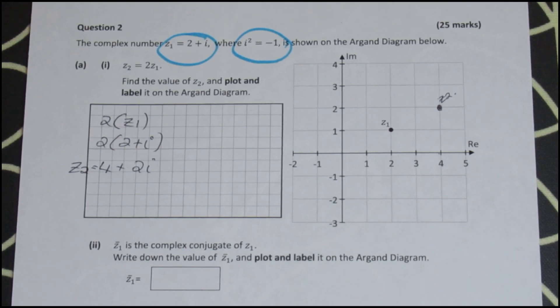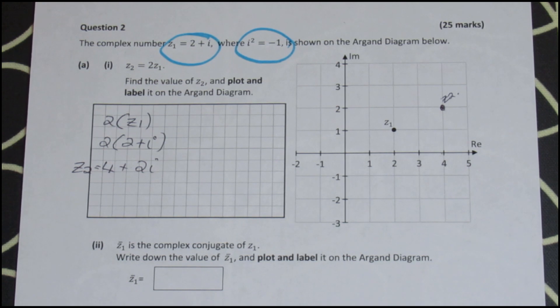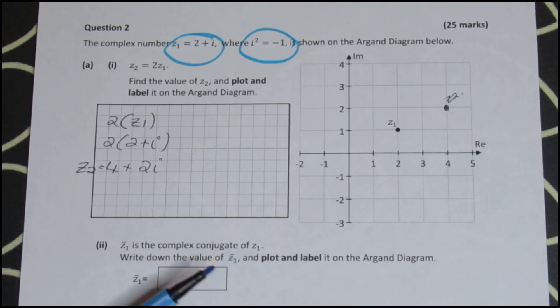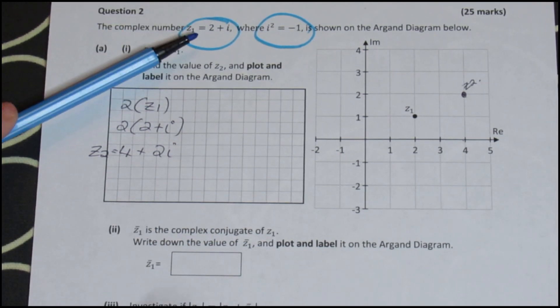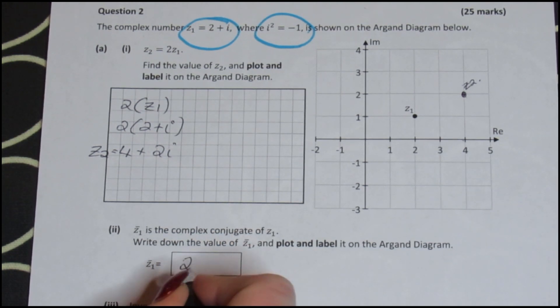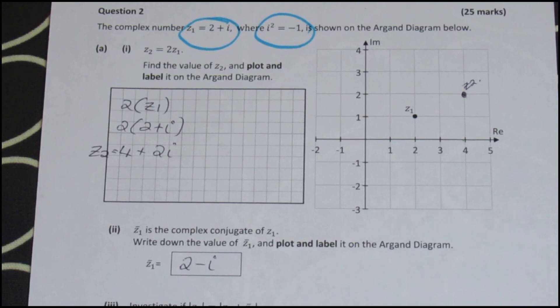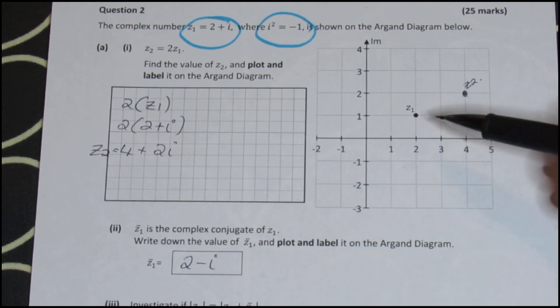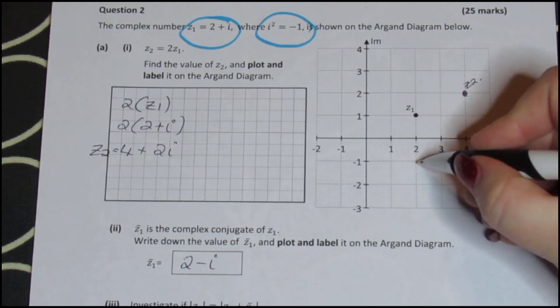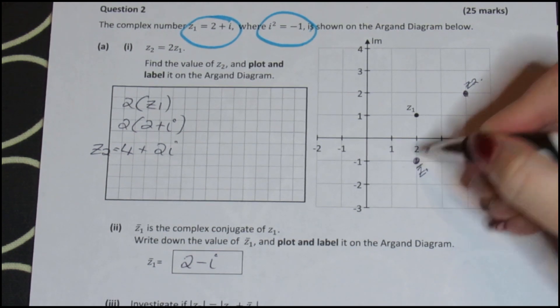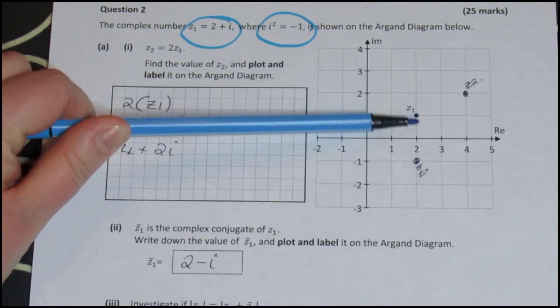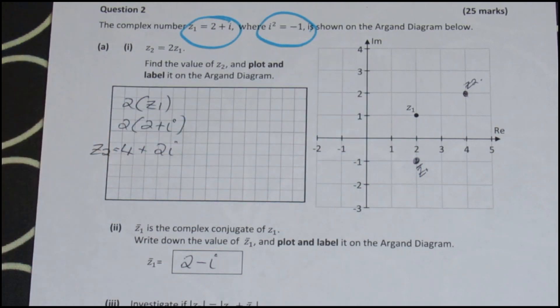Part II of part A is asking me for Z1 with a little bar over it. That stands for the complex conjugate of Z1. If Z1 is 2 plus i, Z1 bar is 2 minus i. So I simply change the sign of the imaginary part. They also say plot and label it on your Argand diagram. We're going to go to 2 and down to minus 1. So Z1 bar is just there on my diagram. Notice that they are pretty much reflections of each other in the real axis there. Okay, so that's a good thing just to know.